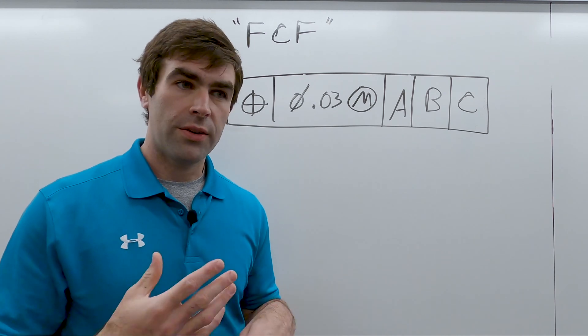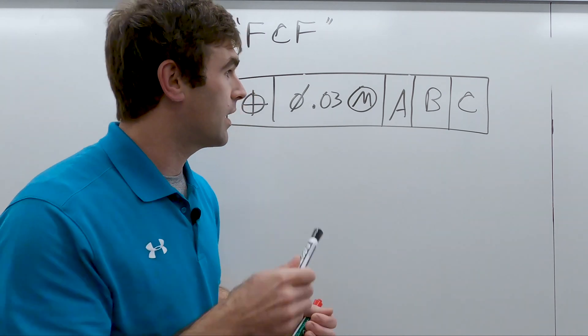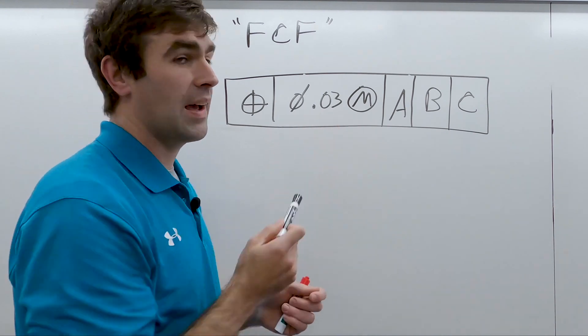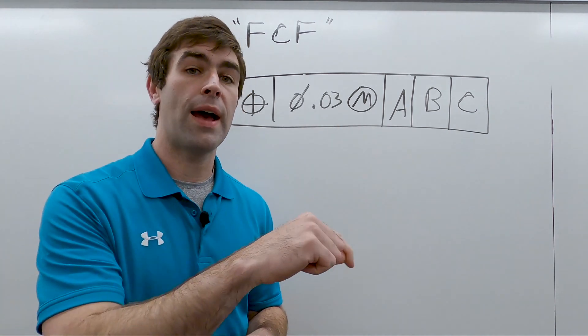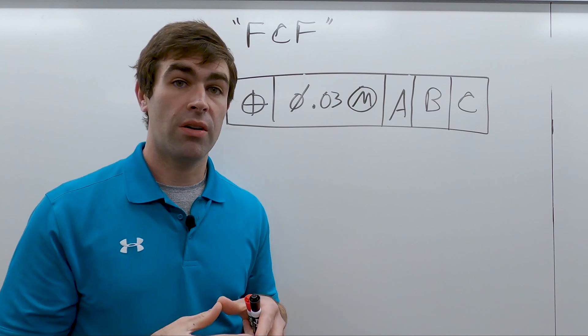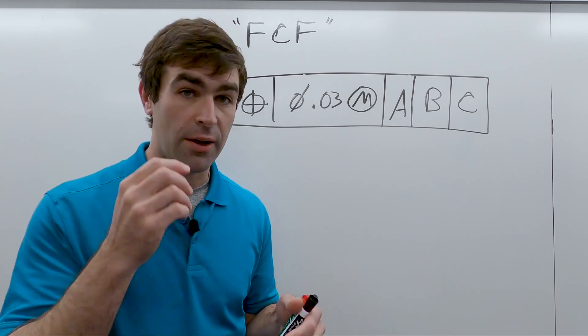So it depends which shape of tolerance zone you have. If it's 30 thou and you have this diameter, you've got a round tolerance zone. The diameter of the tolerance zone is 30 thousandths.